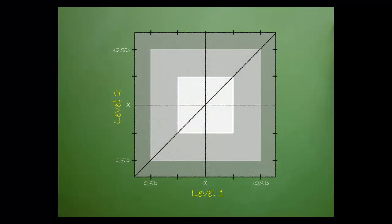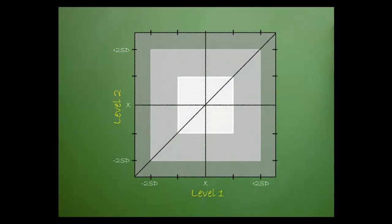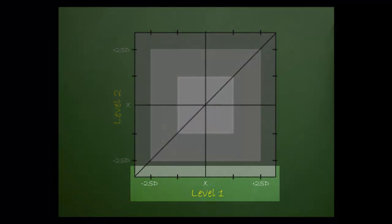Let's start by looking at the components that make up a Youden chart. The vertical axis represents the mean and standard deviations of one of the control levels in the comparison group. The horizontal axis represents the mean and standard deviations of the other control level of the comparison group.